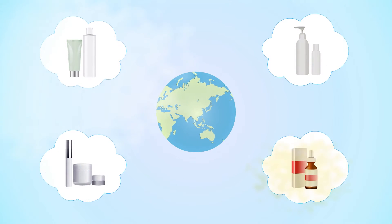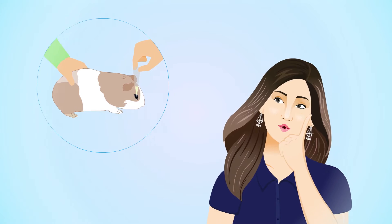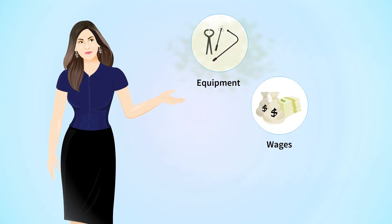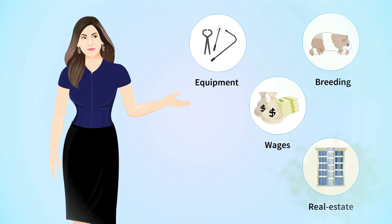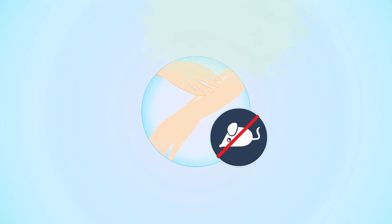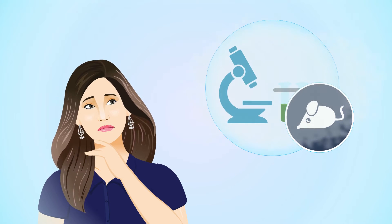Globally, cosmetic and skin care product use is on the rise, yet most of us are unaware of the true cost of animal-tested products that we use. A new skin product in development is tested on around 200 animals — that's 100 million innocent animal lives sacrificed per year. Besides the cost to animal life, there are wages, equipment, breeding, real estate, and time-to-market costs. Even if one uses animal-tested-free products today, the sad reality is that companies either use animal-tested chemicals in their products or contract a third-party lab to do animal testing.